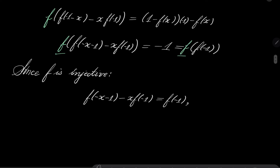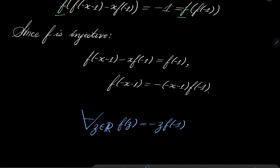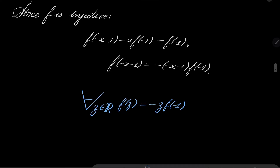This can be rewritten as f(-x - 1) = (-x - 1)·f(-1), after putting everything on the right-hand side. Since x is arbitrary, we can replace x by any variable. Setting z = -x - 1, we get that for any real number z, f(z) = z·f(-1). So our function is linear.